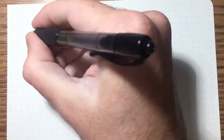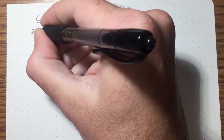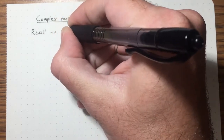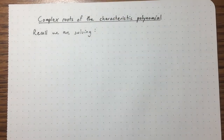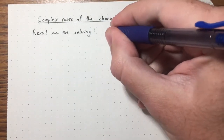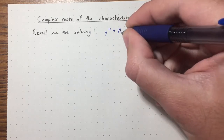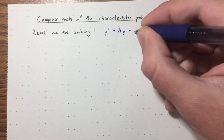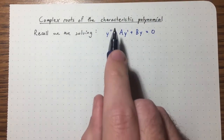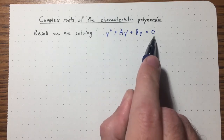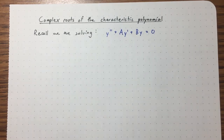Now that we've talked about complex numbers in some detail, let's see what to do in a case where our characteristic polynomial has complex roots. So let's recall what problem we were solving. We are solving a second order differential equation: y'' + ay' + by = 0, where a is just a constant. This is a second order linear homogeneous differential equation with constant coefficients.